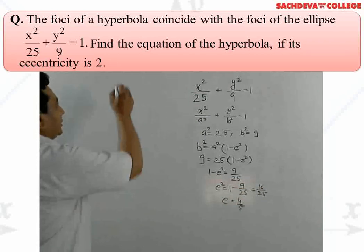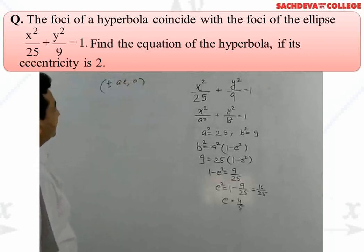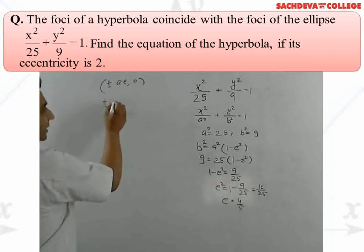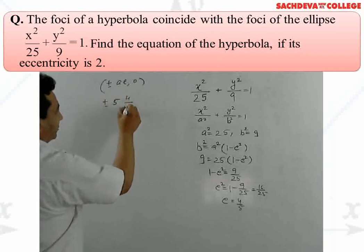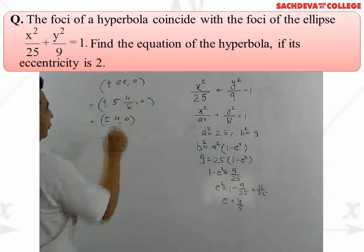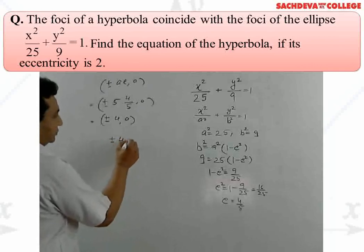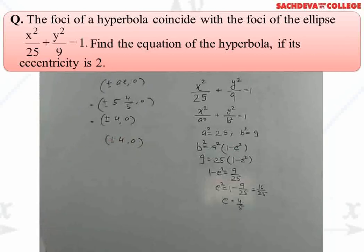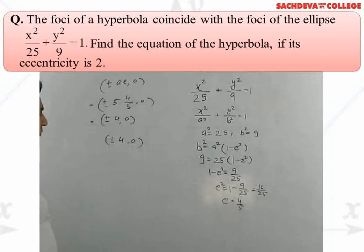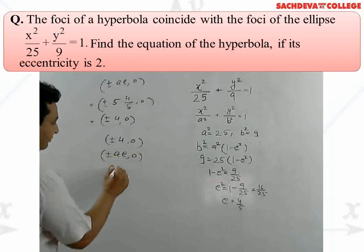The foci of the ellipse are at (±ae, 0). Since a = 5 and e = 4/5, the foci of the ellipse are at (±4, 0). Given that the foci of the hyperbola coincide with the foci of the ellipse, the foci of the hyperbola are also at (±4, 0). Since the foci of a hyperbola are at (±ae, 0), we have ae = 4.